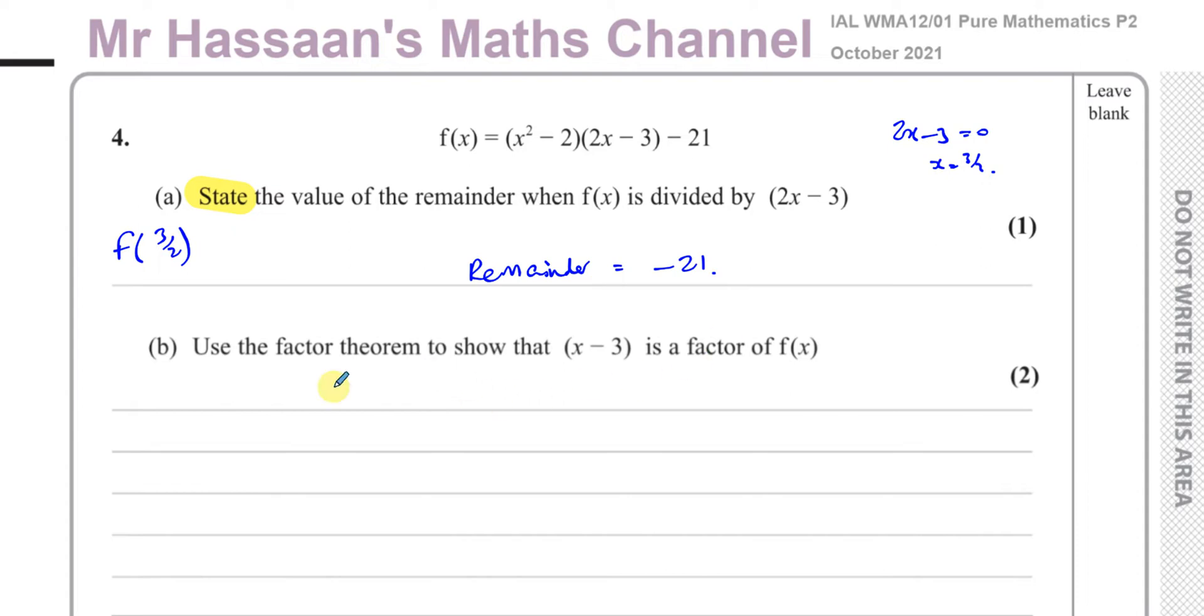Now for part B, it says use the factor theorem to show that x minus 3 is a factor of f(x). Here what we're going to do, x minus 3 equals 0 when x equals 3. So we're going to put 3 inside this function, and we're going to show that it equals 0. Let's see what happens when you put 3 inside this function. You're going to have 9 minus 2 in that bracket, and 2 times 3, which is 6 minus 3 in that bracket, and minus 21. That gives you 7 times 3 minus 21, which is 21 minus 21, which is equal to 0.